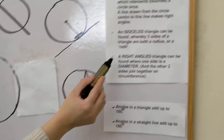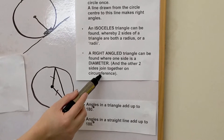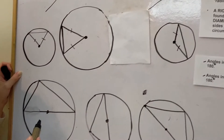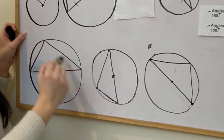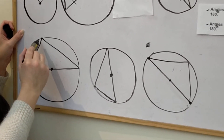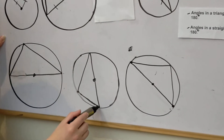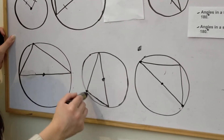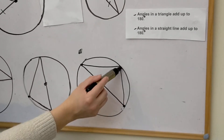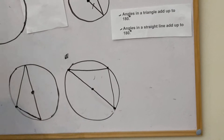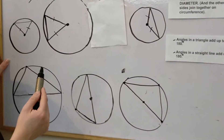The last point says that a right angle triangle can be found where one side is a diameter and the other two sides join together on the circumference. I've got three very different types of triangles that fit that criteria. In the first, the diameter goes straight across the middle and the other two sides join on the circumference. In the second, the diameter goes straight up and down. In the third, one side is the diameter and the other two sides connect on the circumference. Feel free to watch this part again before we move on to actual examples.